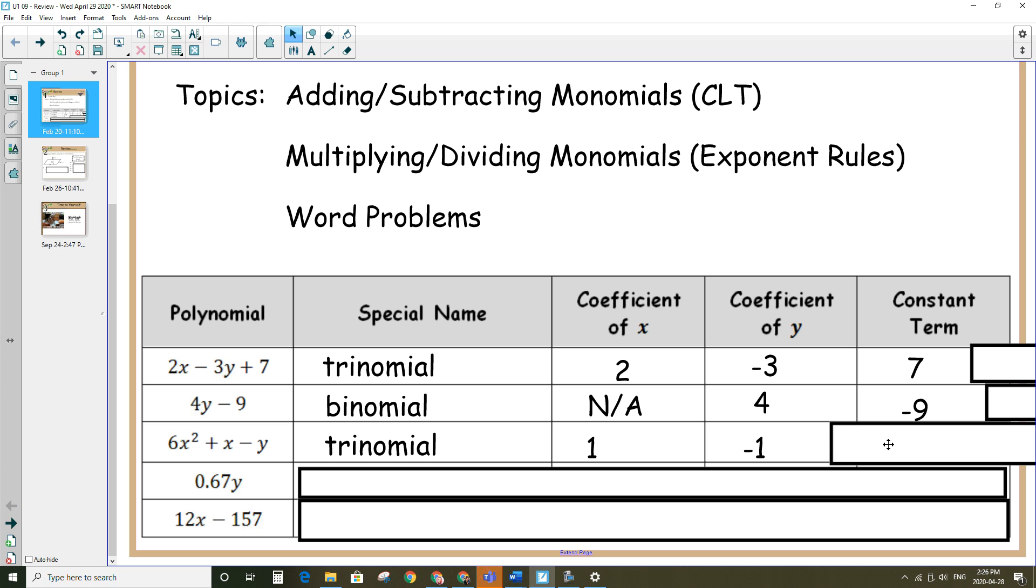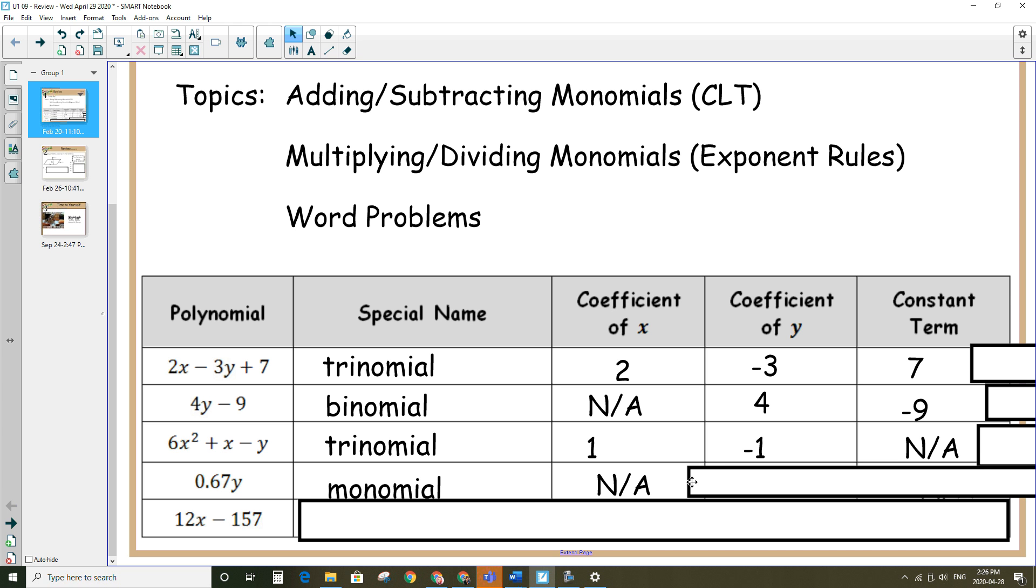The fourth example, this has one term, so it's called a monomial. There is no x term, not applicable, coefficient of y would be 0.67, and there is no constant term, so not applicable again.